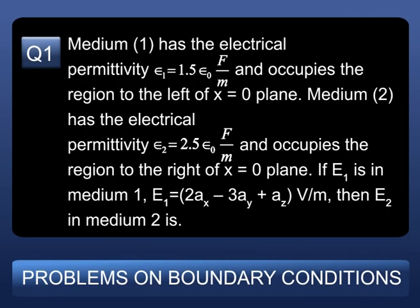Problem 1: Medium 1 has electrical permittivity ε₁ = 1.5ε₀ F/m and occupies the region to the left of the x=0 plane. Medium 2 has electrical permittivity ε₂ = 2.5ε₀ F/m and occupies the region to the right of the x=0 plane. If E₁ in medium 1 is E₁ = 2ax − 3ay + az V/m, then find E₂ in medium 2.